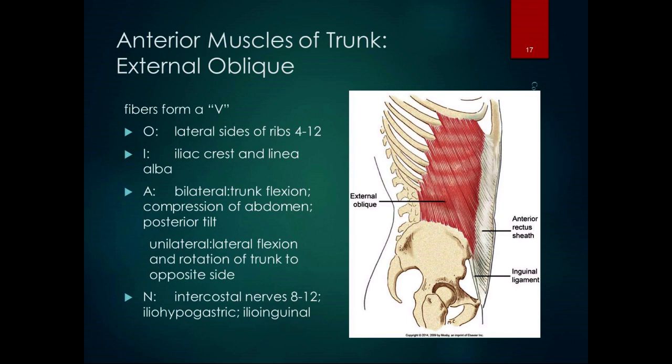The oblique line of pull from lateral to medial gives rotation, and the superior-to-inferior direction gives flexion. Bilaterally, you get trunk flexion, compression of the abdomen, and it's part of the force couple for posterior tilt. Unilaterally, you get lateral flexion to the same side and rotation to the opposite (contralateral) side. Put your fingers on your iliac crest and your ribs and rotate to the opposite side to feel it. Innervated by intercostal nerves 8 through 12 and a couple other nerves in the neighborhood.